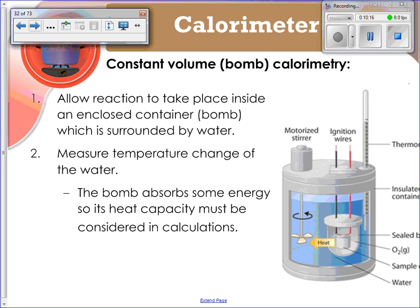In order for this process to be accurate and precise, it has to be carried out in the calorimeter, because otherwise that heat's just going to be lost to the surroundings and you won't be able to calculate it. The calorimeter is going to keep that heat intact and you're going to be able to calculate it. The first type of calorimeter is constant volume or bomb calorimetry. It allows the reaction to take place inside the enclosed container, the bomb, and it's surrounded by water. You're going to measure the temperature change of the water. This bomb absorbs some of the energy, so the heat capacity must be considered in calculations.